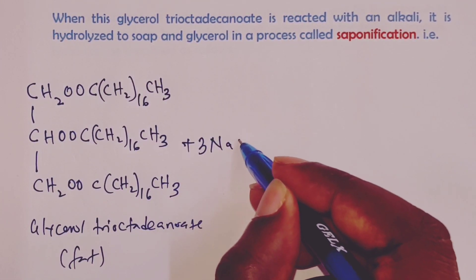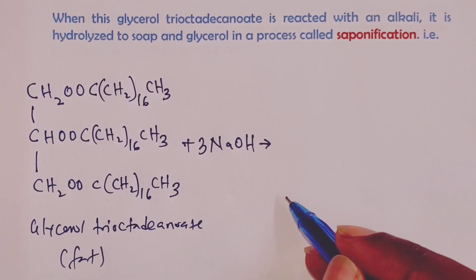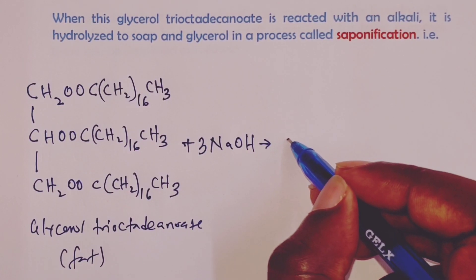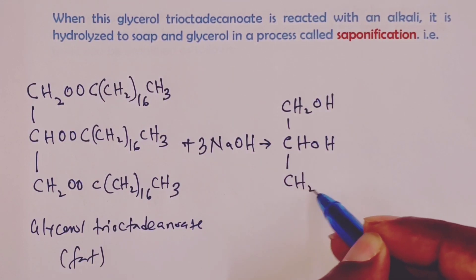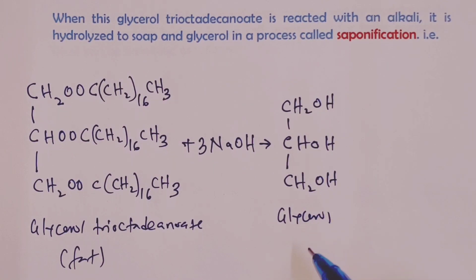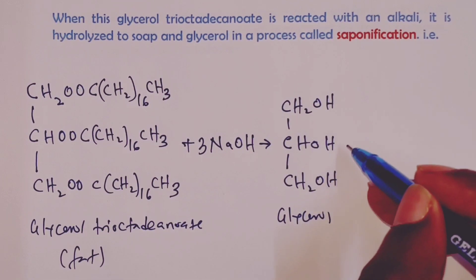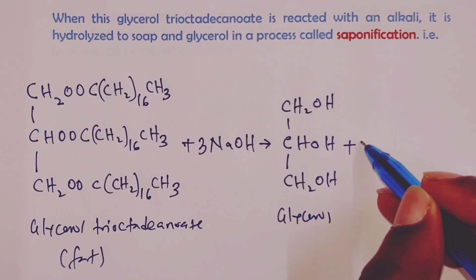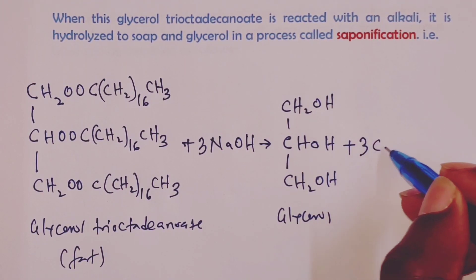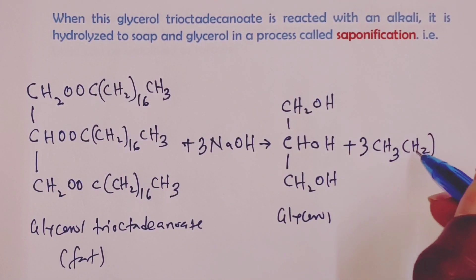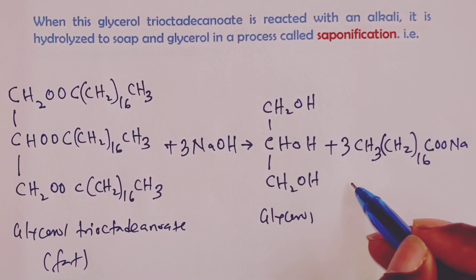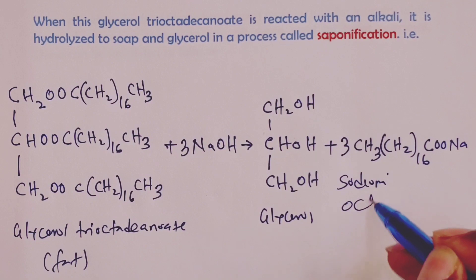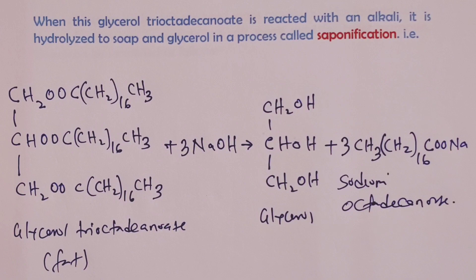Using three moles of sodium hydroxide, we shall regenerate our glycerol — CH2OH linked to CHOH linked to CH2OH — which is the glycerol we started with to produce our glycerol tri-octadecanoate. This will be produced together with three moles of our soap, sodium octadecanoate, with the formula CH3(CH2)16COONa. This is our soapy detergent, but this time obtained from an animal fat hydrolyzed by an alkali.